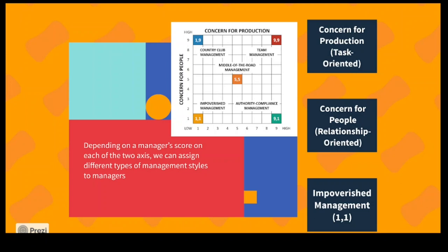Country club management is scored one to nine — low concern for production but high concern for people. Authority compliance management is the opposite — very high concern for production but not much concern for people. And you could also be middle of the road, a 5-5, which is fifty-fifty between the two.